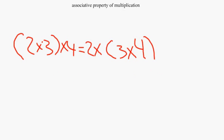Example: parentheses 2 times 3, times 4 equals 2 times parentheses 3 times 4. Always do parentheses first. So we did 2 times 3 which gave us 6, then we did 6 times 4 which gave us 24.